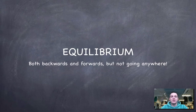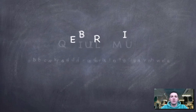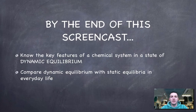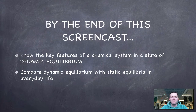Hello and welcome to the first in a series of six films about a standard level equilibrium topic from the IB Diploma Chemistry course. In this film we're going to be looking at what we mean by equilibrium, and hopefully by the end of it you'll have an understanding of the key features that a chemical system that has reached a state of dynamic equilibrium will have, and we'll compare this dynamic equilibrium to the sort of static equilibria that we're probably a bit more used to seeing.